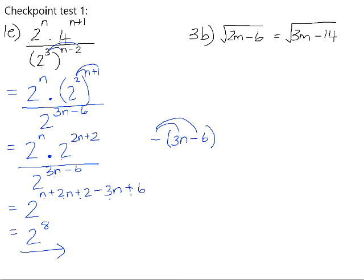Okay, number 3b. We've got an equation with a radical in, and we've got a square root on the left and a square root on the right. They're both a single term on both sides, so we can go straight away and square both sides of the equation in order to remove those square roots. So we're just left with 2m minus 6 is equal to 3m minus 14.